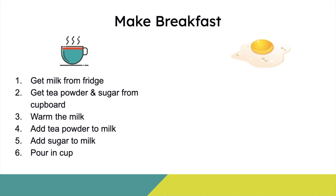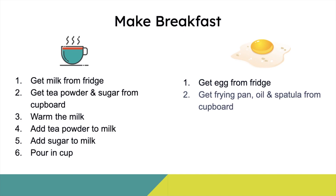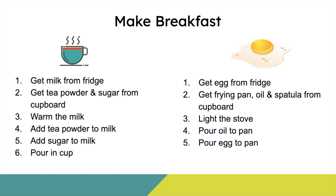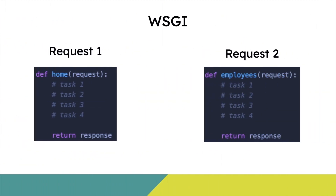Then I'll go on to make the omelet. I'll get the egg from the fridge, get the frying pan, oil and spatula from the cupboard. I'll light the stove, pour oil to pan, pour egg to pan, then pick the omelet using the spatula and put it in the plate. This is the same process followed by WSGI. You get a request from your client that points to a function or class which has lines of code. Each line is executed sequentially and finally the response is provided to the client. The application then handles the next request and follows the same process.